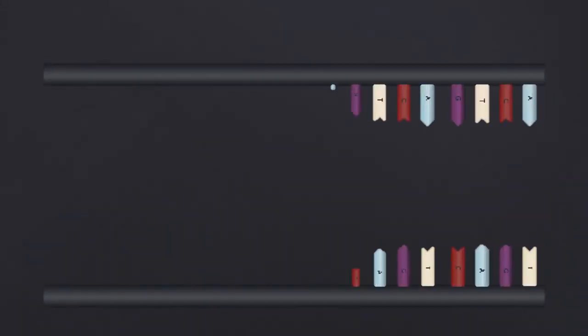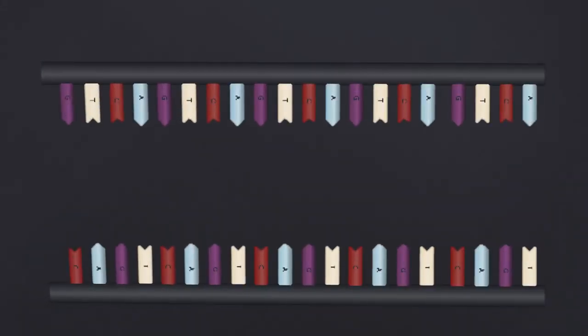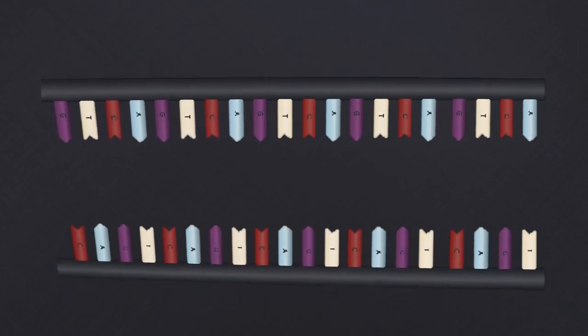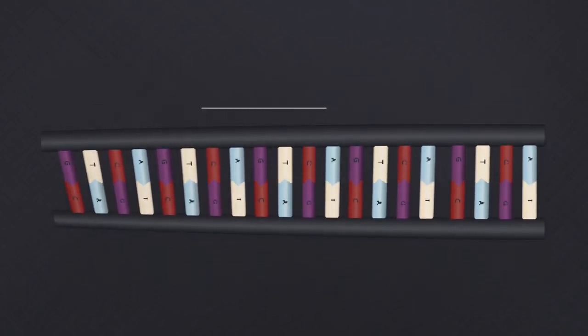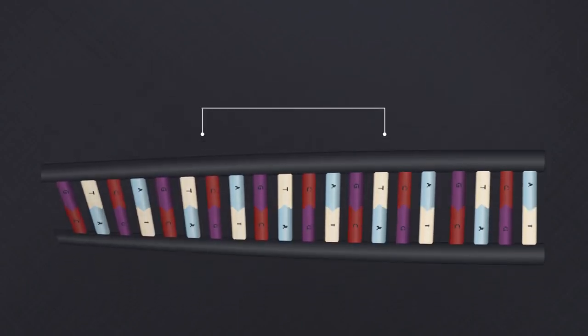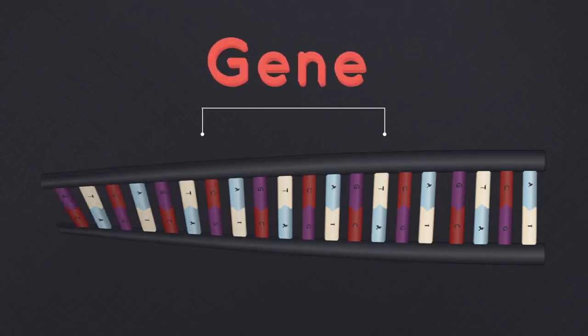DNA contains lots and lots of sequences. Some sections of these sequences have a specific genetic code for making particular proteins. And these special sections are called genes.